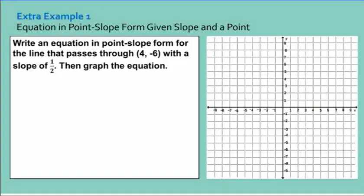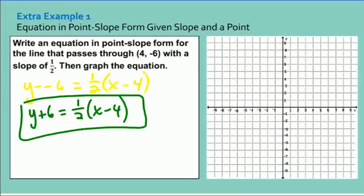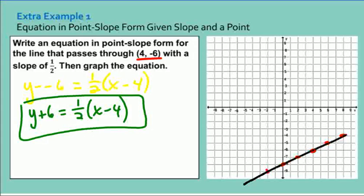Next, write an equation in point-slope form for a line that passes through 4, negative 6 with a slope of one half, then graph it. We write Y minus negative 6 equals one half times X minus 4, which simplifies to Y plus 6 equals one half times X minus 4. Plotting the point 4, negative 6 and using slope one half — up 1 to the right 2, or down 1 to the left 2 — we draw the line through the points.